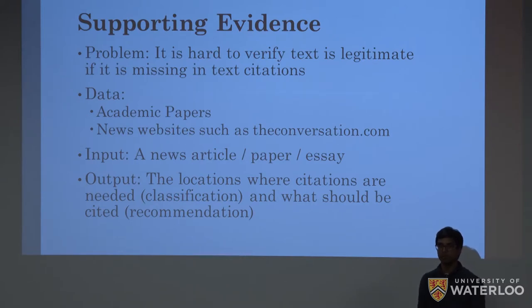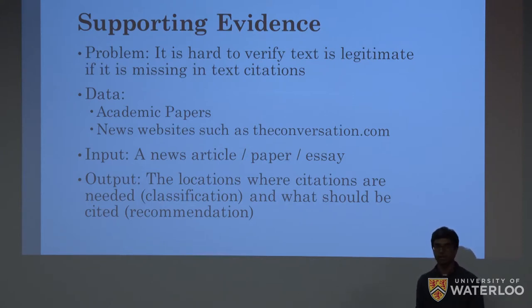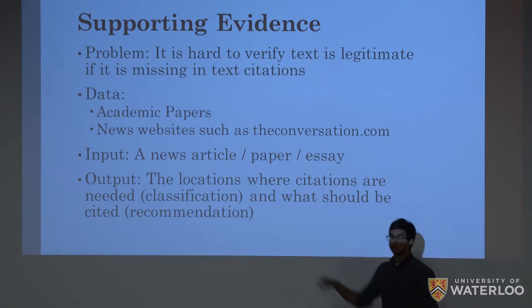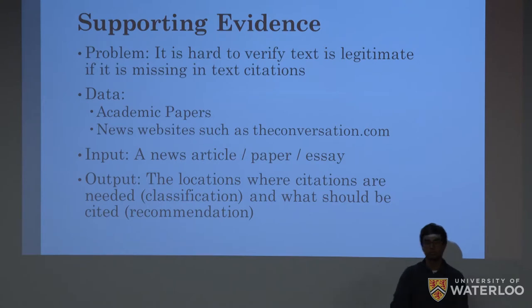For example, if you saw a sentence like 'Canada has ten provinces and three territories,' that might be a good point where a citation is needed to back up that fact, and your classifier would predict true right there. After that classification step, you would need to apply another technique that hasn't been covered yet in this course but is super important to learn, called recommendation systems.